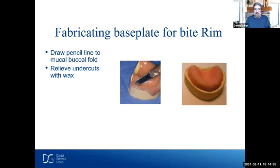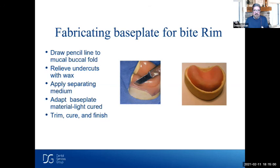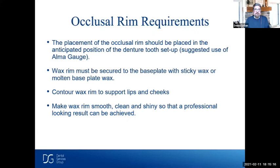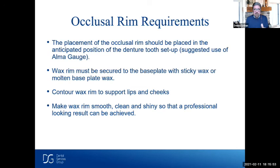To fabricate the base plate for the wax rim, I draw a line at the mucobuccal fold, relieve any undercuts, apply separating medium, apply the base plate material, then trim, cure, and finish. We want a good stable base plate that's smooth and retentive so it stays in the mouth during try-in. The placement of the occlusal rim should be in the anticipated position of the denture tooth setup — about 8 to 10 millimeters from the papilla on average, which is where you're setting denture teeth. The wax rim must be secured to the base plate so it doesn't tear away.